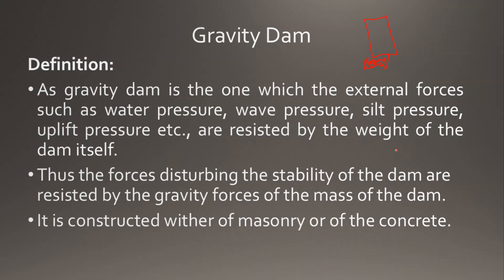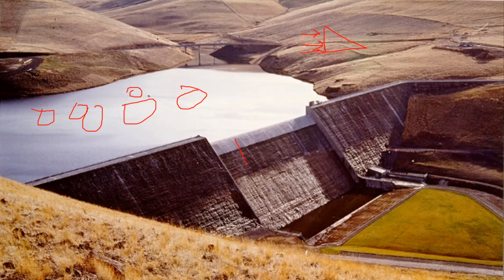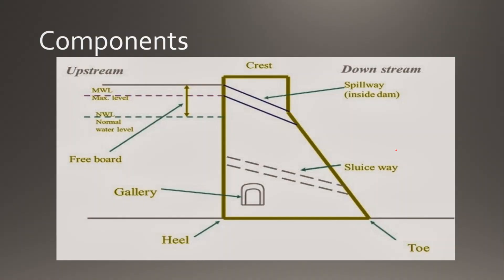The forces that could disturb the stability of the dam are resisted by the gravity force of the mass of the dam. The overall weight distributes against wave pressure, silt pressure, water pressure, and uplift pressure. The dam is generally constructed in masonry or concrete. Its components include crest, downstream spillway, sluiceway, shear gallery, freeboard, maximum water level, normal water level, and upstream (input) and downstream (output).